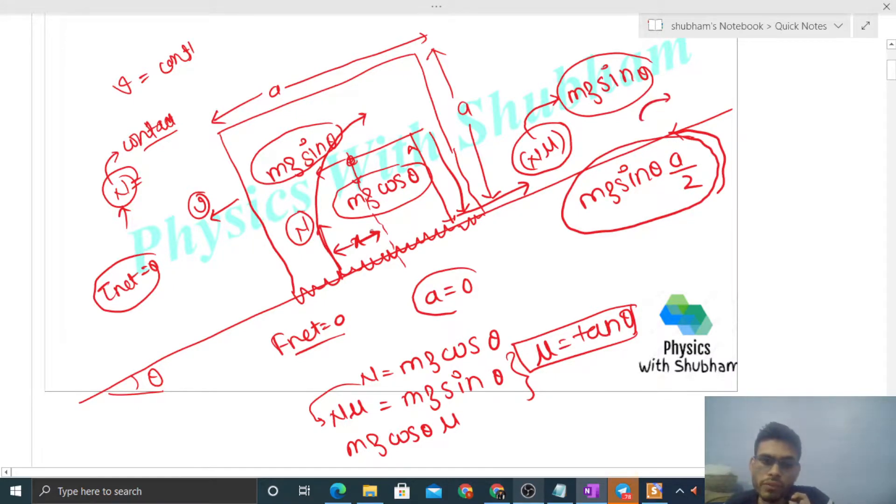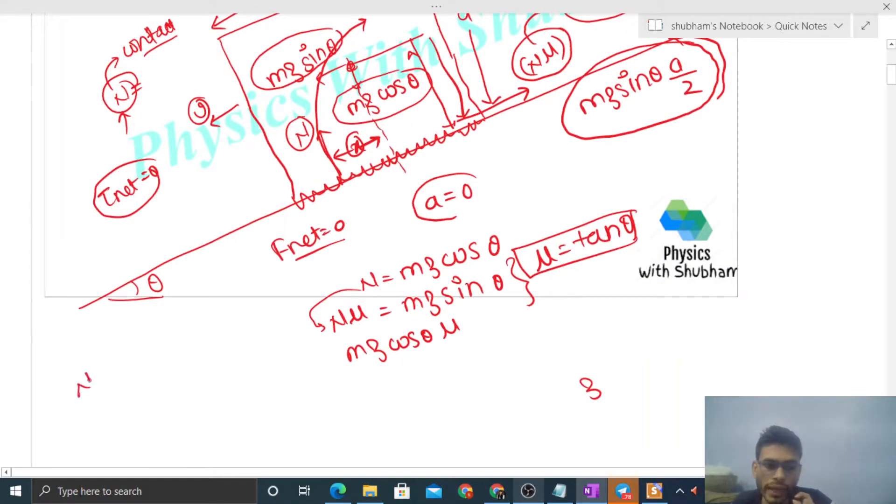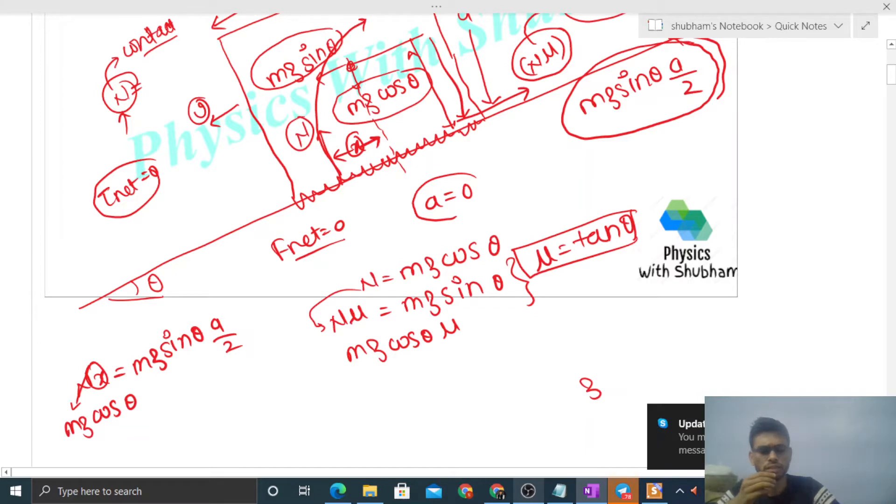If I ask what is the value of x, now we know normal reaction's torque. So N times x equals the torque, which is mg sin theta times a by 2. Normal reaction's value is mg cos theta, so we can put that here and get the value of x. The question might also ask to find the value of x.